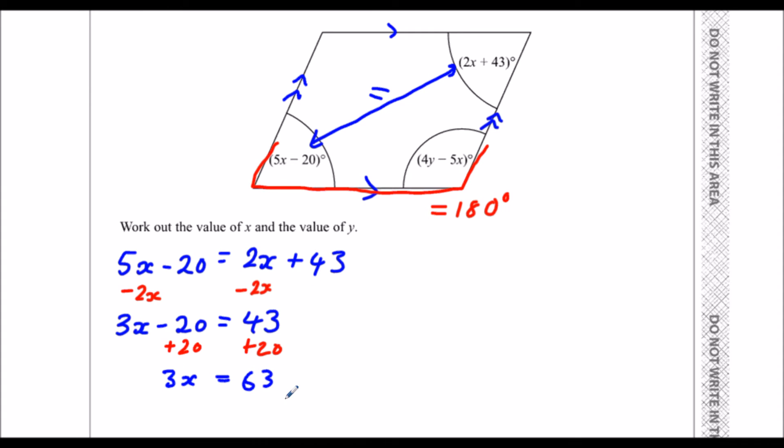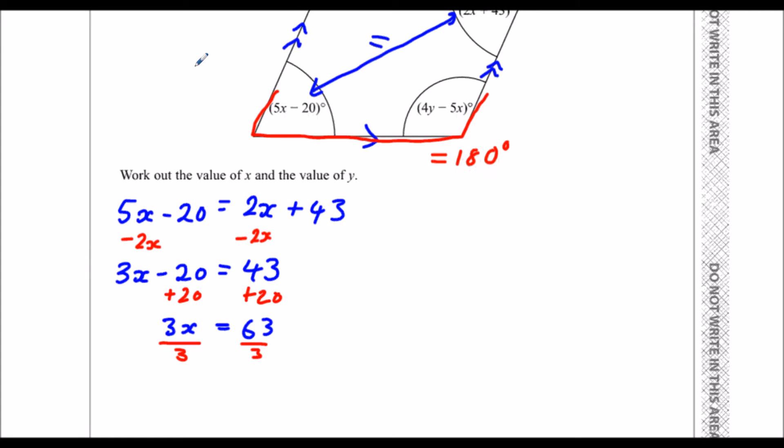And then, 3x is 63. To get x by itself, I'm going to divide by 3. So divide by 3, divide by 3. And that leaves me with 21. So x is 21.